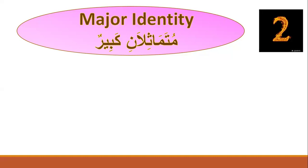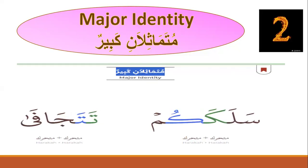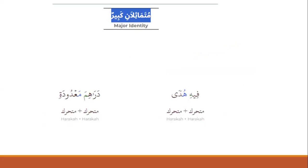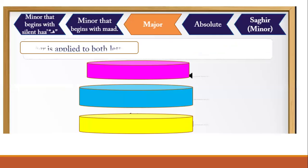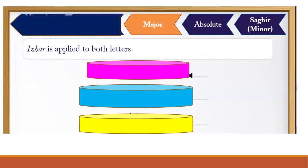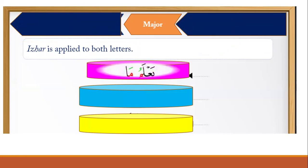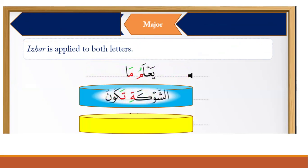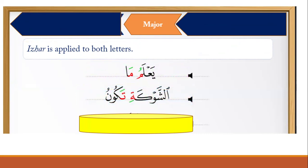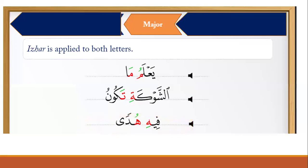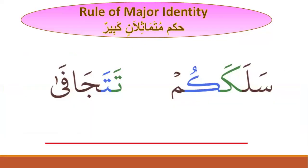The second category is major identity — متماثلان كبير. The first letter has harakah and the second letter also has harakah. Examples: سلككم, تتجافى, فيه هدى, دراهم معدودة. Idgham is applied to both letters, as in يعلم ما, أشوكة تكون, سيه هدى. The rule of major identity is idgham.